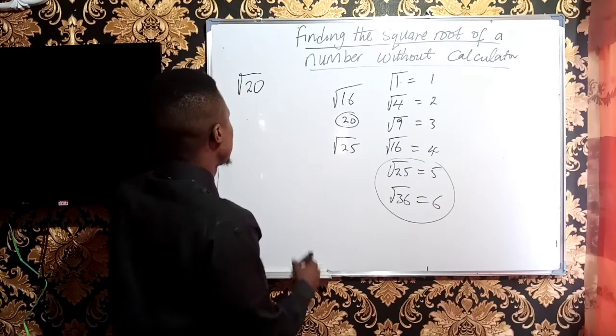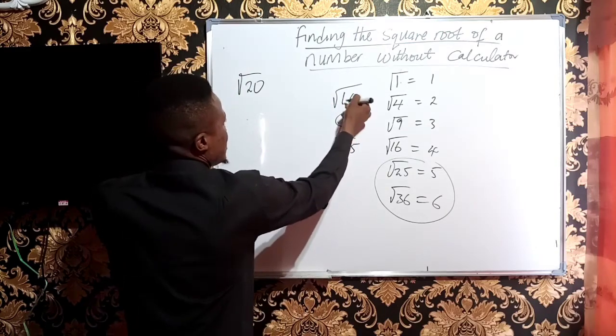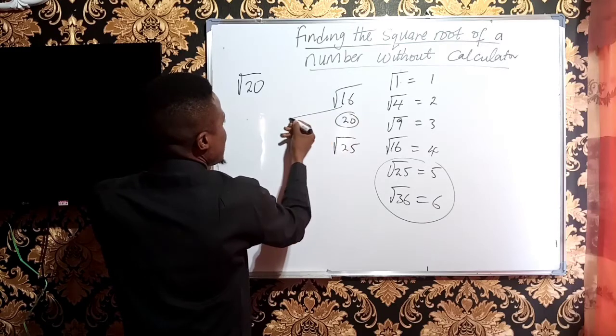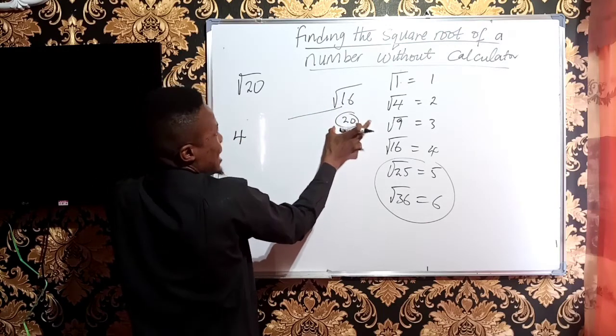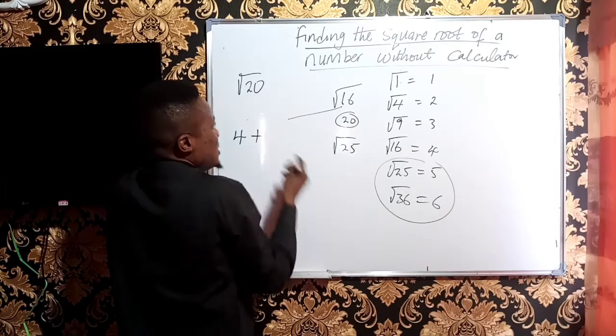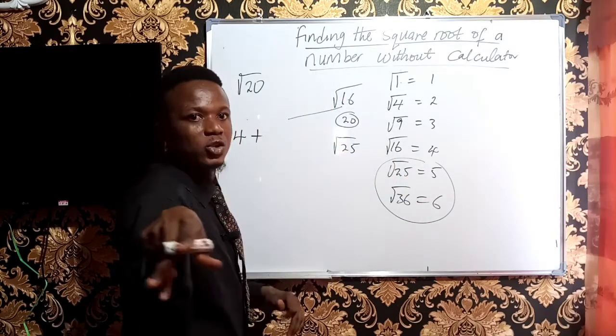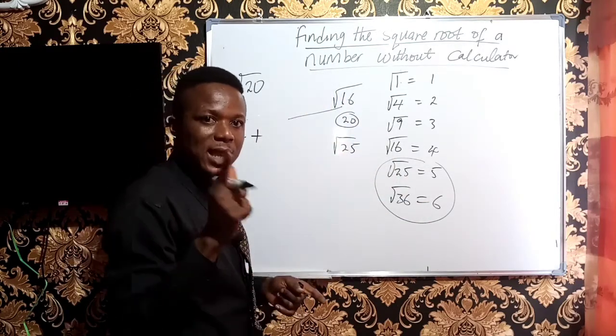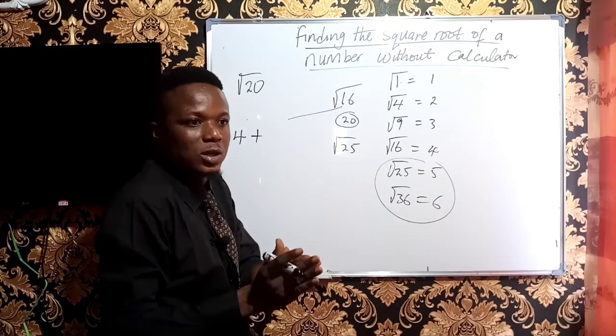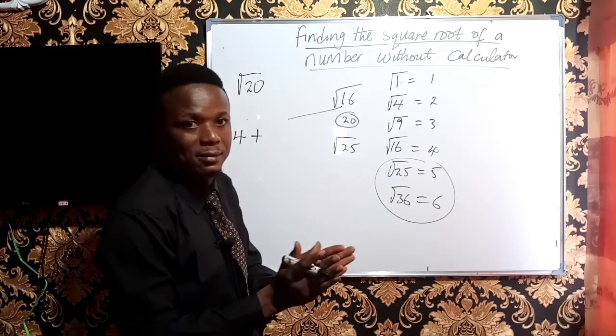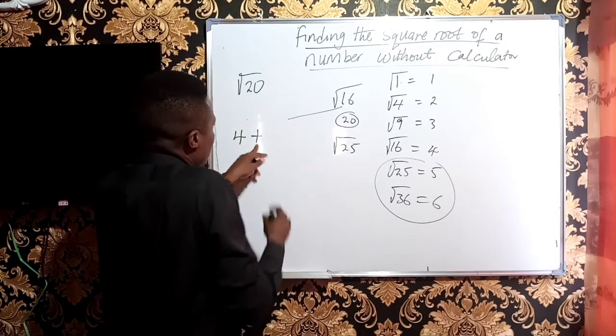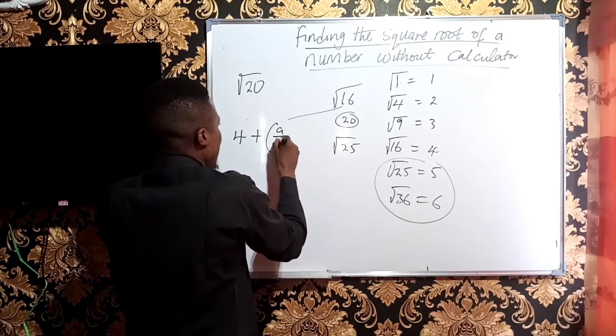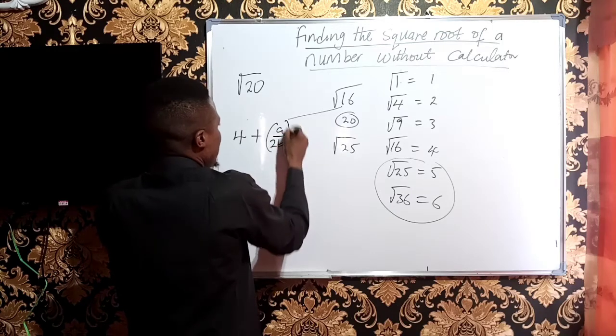Because of that, we are taking 16. And the square root of 16 will give us 4. Now, because you are taking a number lesser than the given number, you say plus instead of minus like I did in the previous one. The previous one, I said minus because I took a value that is higher than my given number. So here, I'm using plus a over 2b. Don't forget the formula.